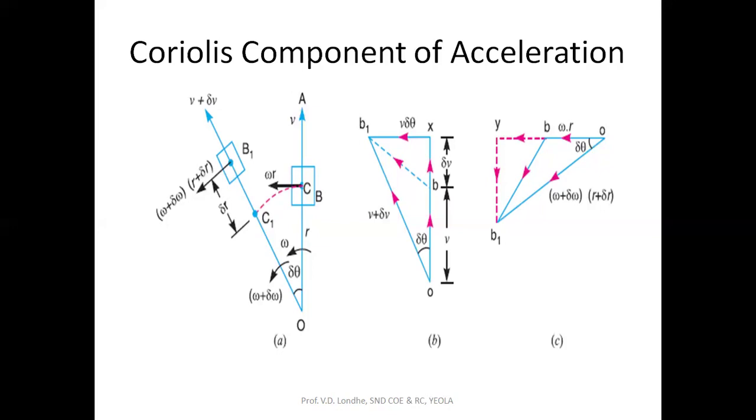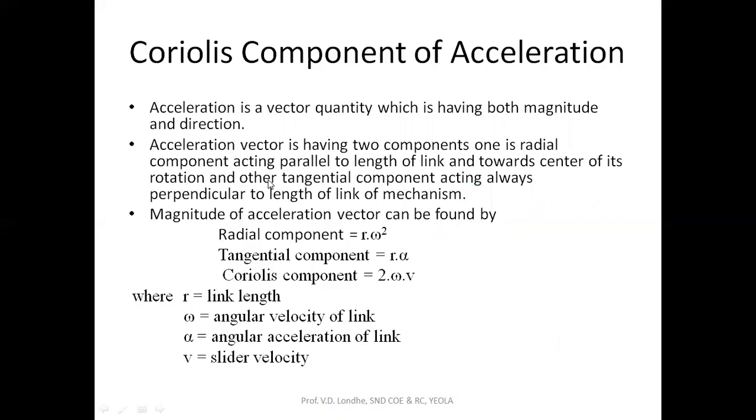For this Coriolis component of expression, there will be three components. One will be radial, acting parallel to the link length OA. Another will be tangential, which is perpendicular, and third will be along the slider. The formulas are the same as the acceleration component.